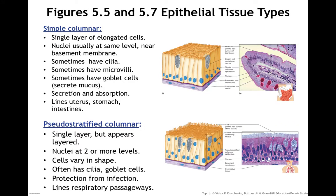Simple columnar cells are a single layer of elongated cells — taller than they are wide. Nuclei are usually at the same level, which is really what makes them different from the pseudostratified. They often have cilia, sometimes microvilli, and goblet cells are dispersed among them. Goblet cells secrete mucus. These are places where we get secretion and absorption, found in the uterus and very important in the digestive system.